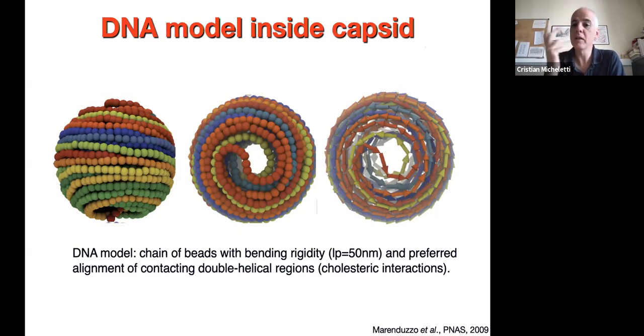The punchline is that if you create a sufficiently detailed model of DNA, then you're able, with simulations of the DNA packaging inside the model—which we treat as a sphere—to reproduce the knot spectrum, but only if you get the correct ingredients.